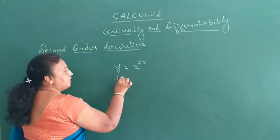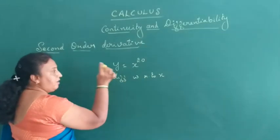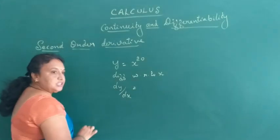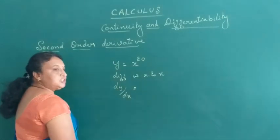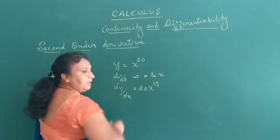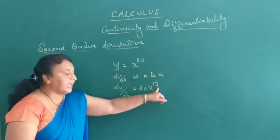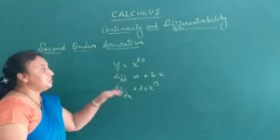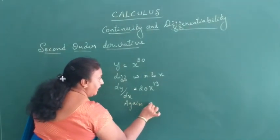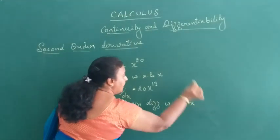Differentiate with respect to x. Then the derivative dy/dx equals the derivative of x to the power 20, which is 20 times x to the power 19. So dy/dx equals 20x to the power 19 is a function. Again, differentiate with respect to x.